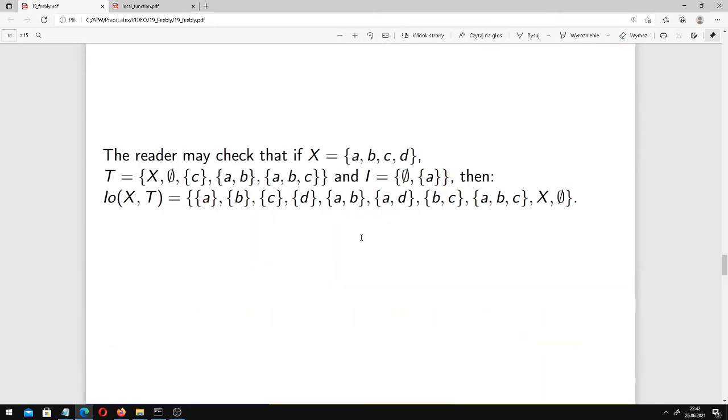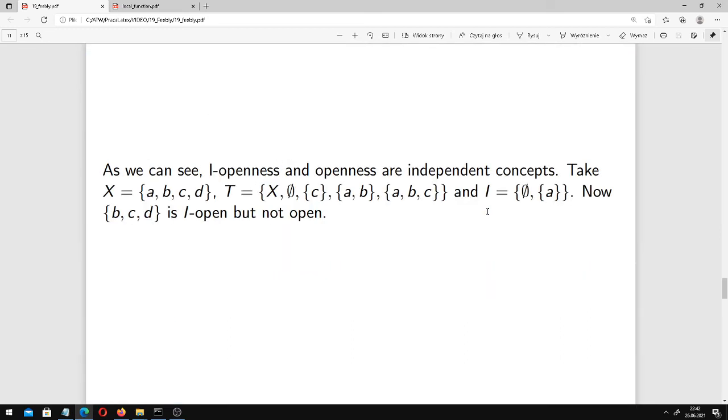The reader may check that if this is our universe, this is our topological space, our topology, and this is our ideal which consists of empty set and singleton of A, then the set of all I-open sets on this space with respect to this ideal is just like this. I think that checking of this fact would be simple but rather boring, maybe even irritating. It can take some time. As we can see, I-openness and openness are independent concepts. For example, in this case, universe, topology, and ideal, we have BCD which is I-open but not open.